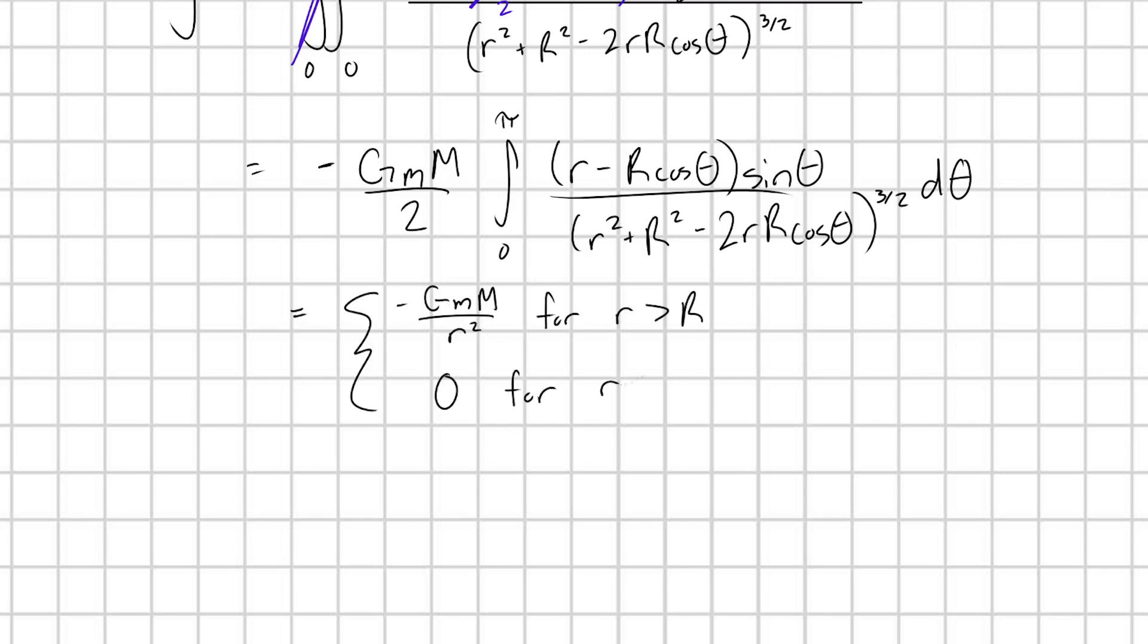Either way, what you'll find is that this all reduces down to minus gmm over r squared for little r greater than capital R, and 0 for little r less than capital R. Or in other words, if my little mass is inside of the shell, it experiences no gravitational force. Or if my little mass is outside of the shell, then the shell is simply acting like a point mass located at its center.